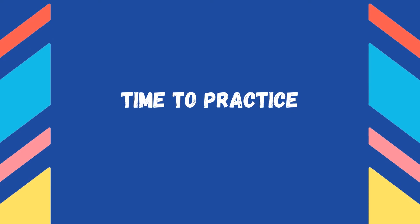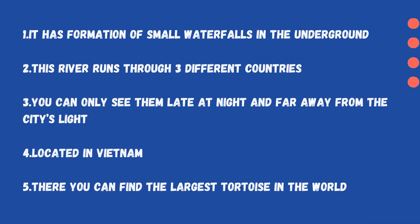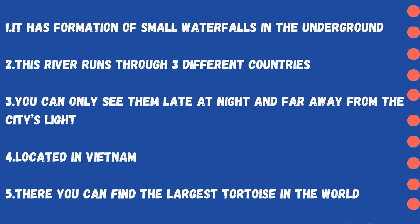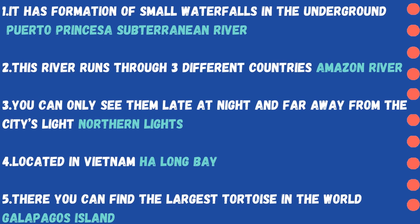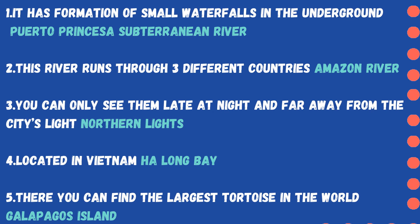Time to practice. In this practice you have a sentence describing one natural wonder in the world, and you have to guess which natural wonder the sentence is describing. Let's review the correct answers. One: 'It has formations of small waterfalls underground.' — The correct answer is Puerto Princesa Subterranean River. Two: 'This river runs through three different countries.' — The correct answer is the Amazon River. Three: 'You can only see them late at night and far away from the city's light.' — The correct answer is Northern Lights.